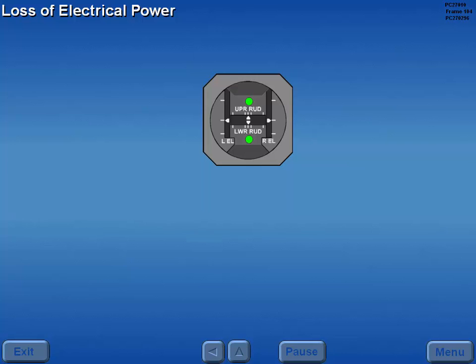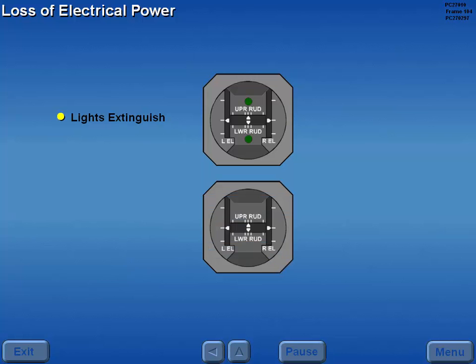If electrical power is lost to the yaw damper system, the green yaw damper lights on the rudder position indicator extinguish. On aircraft without lights, a yellow flag appears for each yaw damper.